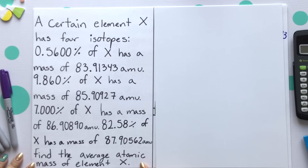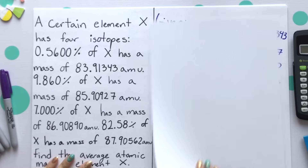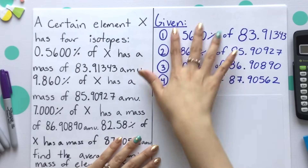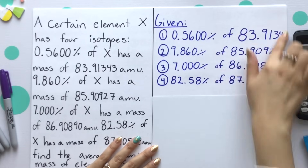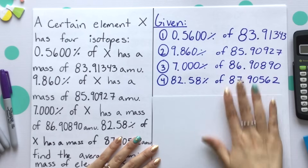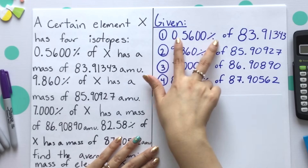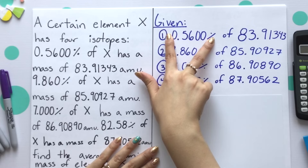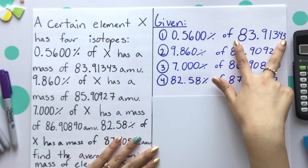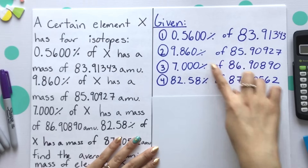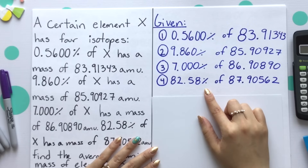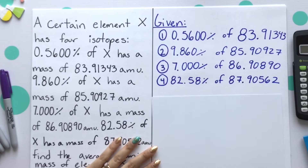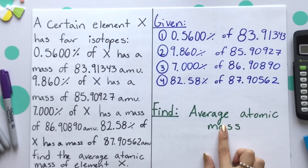Find the average atomic mass of element X. You have four different isotopes — those are our givens. That's 0.56 percent of our certain amount of mass. This is what we refer to as percent abundance, where we have a certain percentage of our first isotope at a given mass. It changes for every single isotope. However, if we were to add up all the percentages, it's always out of 100 percent. In this example, you are finding your average atomic mass.